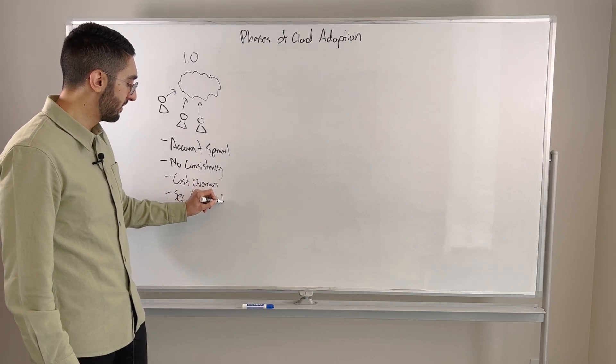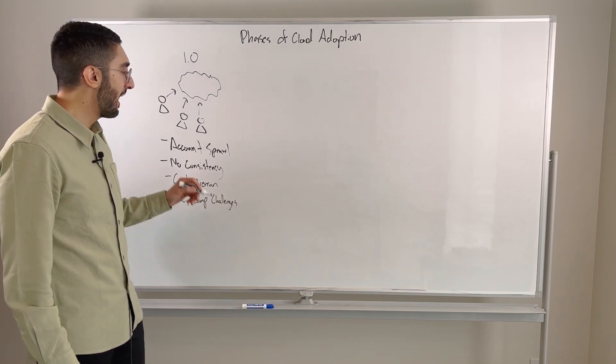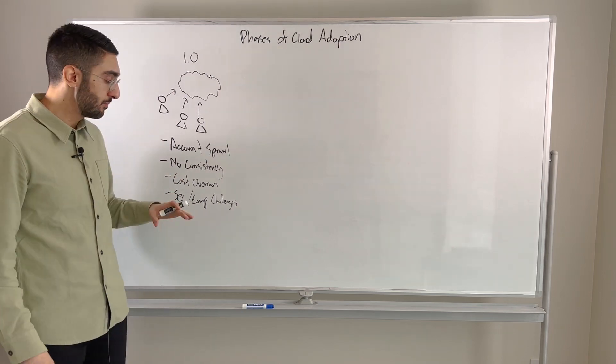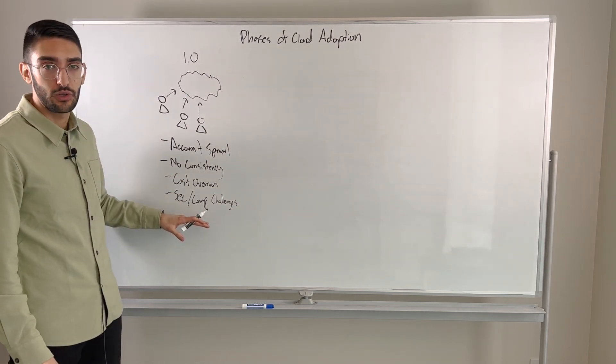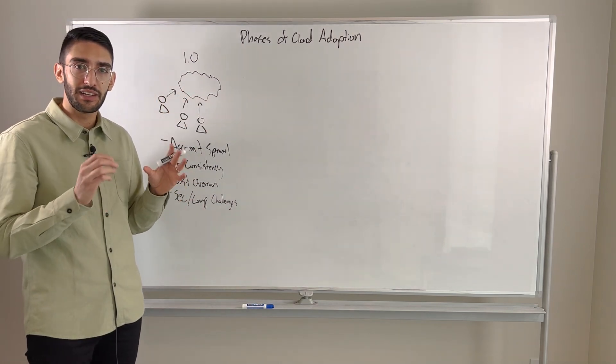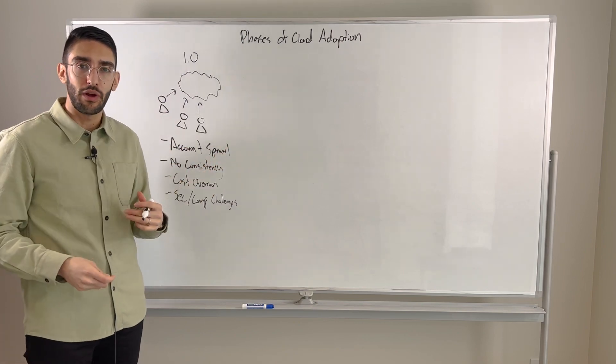And the second problem is you usually end up with a number of security and compliance challenges. And the reason for that is oftentimes, there's a divide in most organizations between who cares and is responsible for those things. Typically, a central security team or central compliance teams own and manage that. But in this model, what we did is basically open up the floodgates, give credentials to the app teams and tell them to run free.